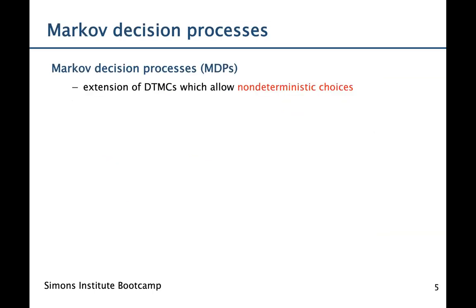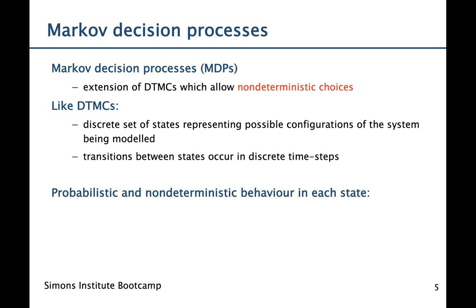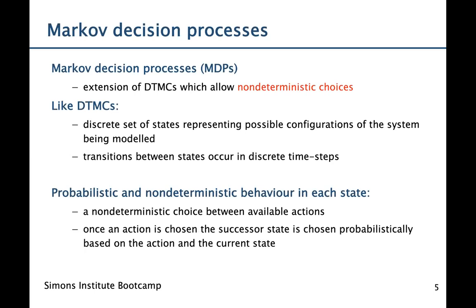Let's now introduce Markov Decision Processes, which we can consider as an extension of DTMCs that allows non-deterministic choices. Like DTMCs and labeled transition systems, we have a discrete set of states representing possible configurations of the system being modeled, and transitions between states occur in discrete time steps. What changes is that we have both probabilistic and non-deterministic behavior in each state: there is a non-deterministic choice between the actions available in a state, and once an action is chosen, the successor state is chosen probabilistically based on both the action and the current state.